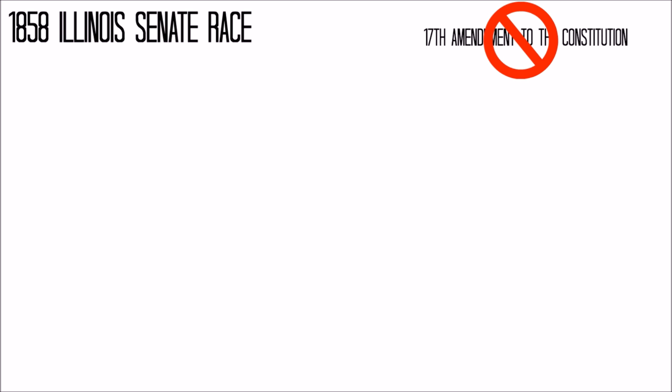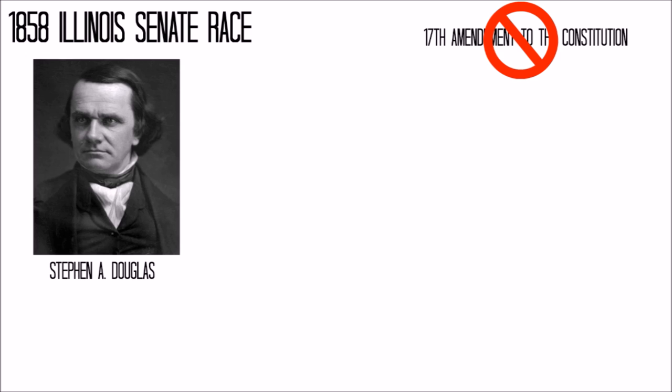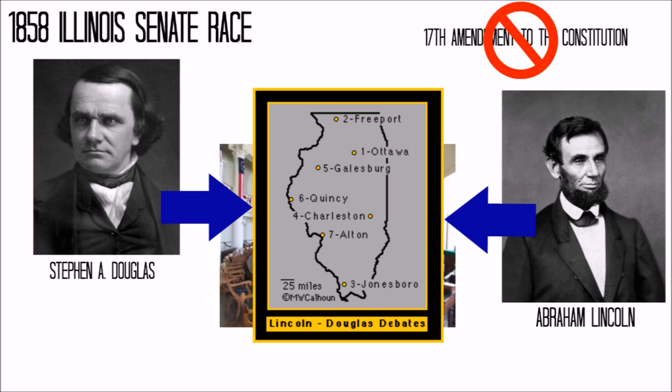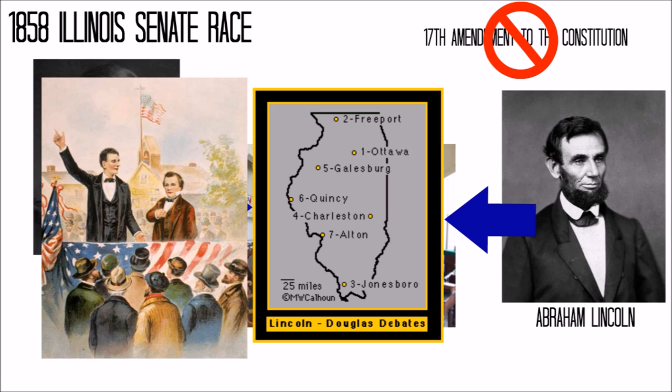The stakes during the 1858 Illinois Senate debate were high. This was a time before the 17th Amendment, so rather than being elected directly by the populace, the incumbent Democrat Stephen Douglas and his Republican challenger Abraham Lincoln would need to appeal directly to state legislators. To accomplish this, they organized a tour of debates throughout Illinois, now known as the Great Debates or Lincoln-Douglas Debates, attended by large and active crowds.